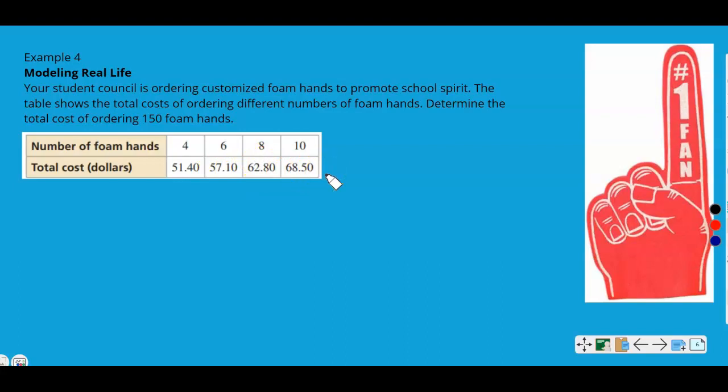So the first thing we need to do is understand what we're talking about. You know, the total cost of four different orders in the table. And we're asked to determine the total cost for ordering 150 foam hands. So that means we're going to have to have an equation. And the first thing we need to do is make a plan. We need to see if the rate of change or if your slope is constant. So if it's constant, we know it's linear. And if it's linear, then we can write an equation because we've already learned how to write a couple of different types of equations.